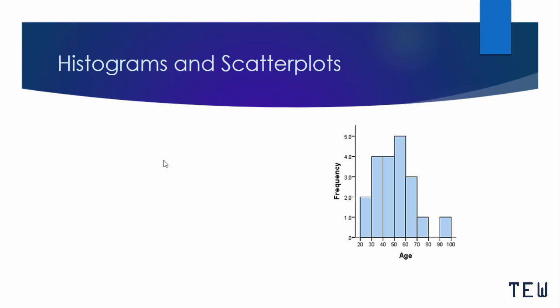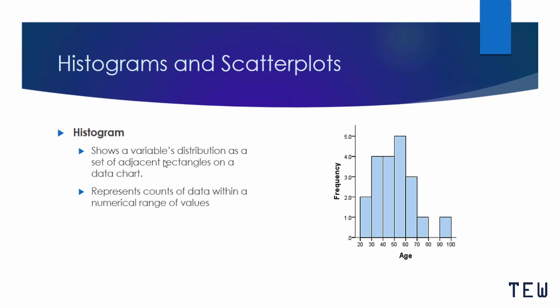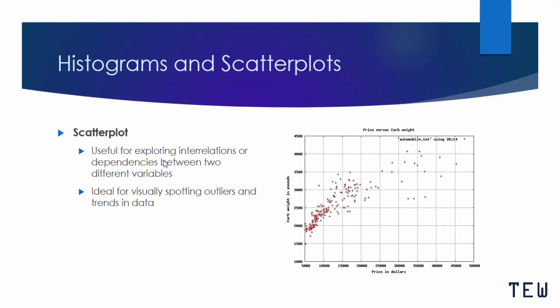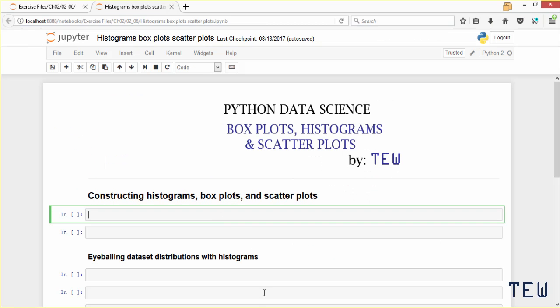Histograms are very simple plots that are used to show variable distribution. Scatter plots on the other hand are used to show relationships between variables. Scatter plot matrices show correlations between variables, and box plots show variable spread and are useful for outlier detection. Let me show you how to create these in Python.